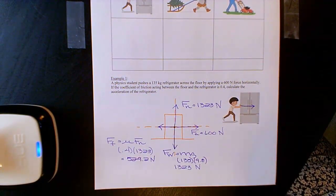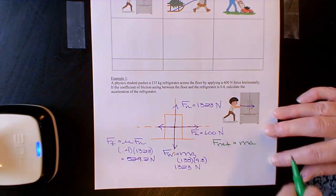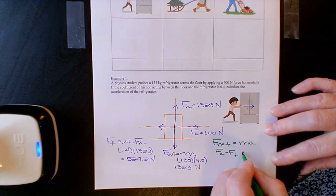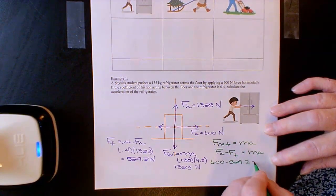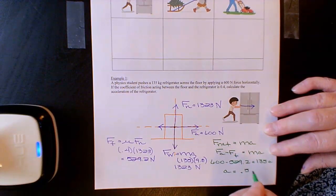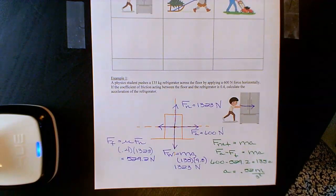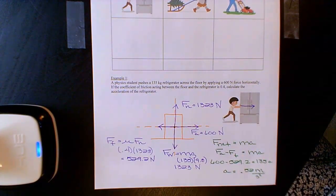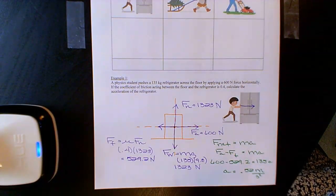So I have my classic free body diagram and can calculate the acceleration of the refrigerator. The refrigerator is accelerating because the applied force is bigger than the frictional force, so the net force is the difference between the two. Solving for acceleration, I get 0.52 meters per second squared. When the student first pushes the refrigerator it will have that initial acceleration — it doesn't necessarily mean he continues with that force across the floor.